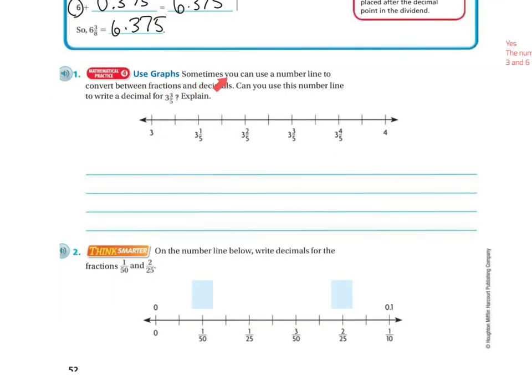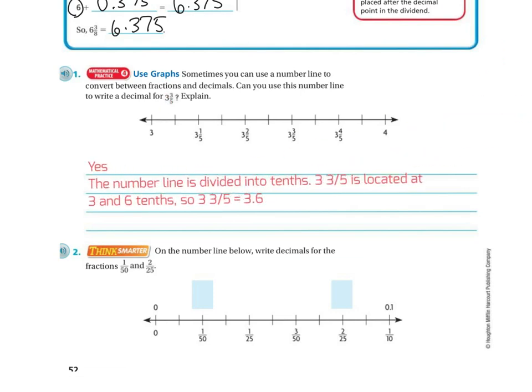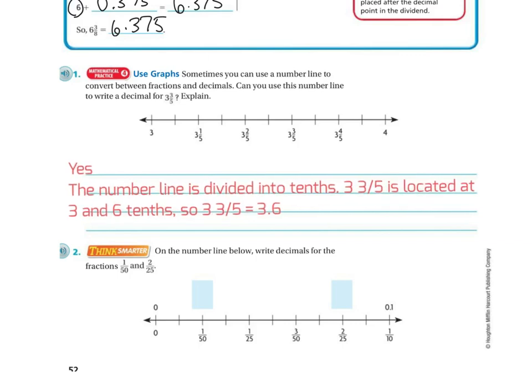Using graphs. Sometimes people can use a number line to convert fractions and decimals. Can you use this number line to write the decimal for 3 and 3 fifths? Explain. So the answer to that is yes. Because the number line is divided into tenths, so we have our 3 and 3 fifths. So 3 and 3 fifths is located between the 3 and the 3 sixths. So 3 and 3 fifths is 3.6.